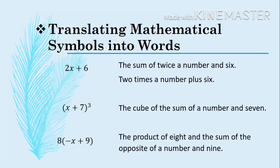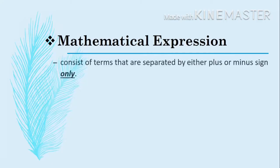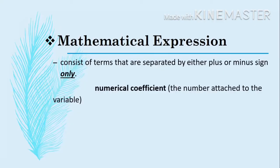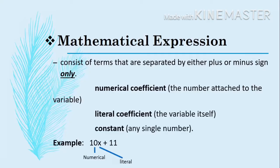Let's now proceed with mathematical expression. A mathematical expression consists of terms that are separated by either a plus or minus sign only. Let's have the parts of a mathematical expression. First is the numerical coefficient — the number attached to the variable. Example: 10x plus 11. The numerical coefficient here is 10. Next is the literal coefficient or the variable itself — in our example, it's the letter x. And lastly, we have the constant, or any single number — in our example, the constant is 11.